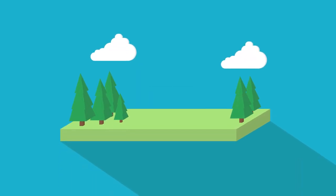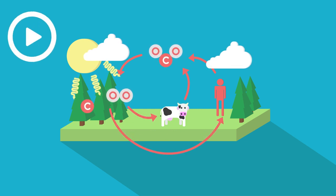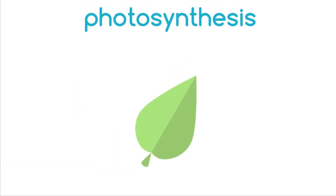First of all, the natural carbon cycle. Can you remember what the process is called where plants capture carbon and give off oxygen? Pause the video whilst you think. Did you remember that this process is called photosynthesis?